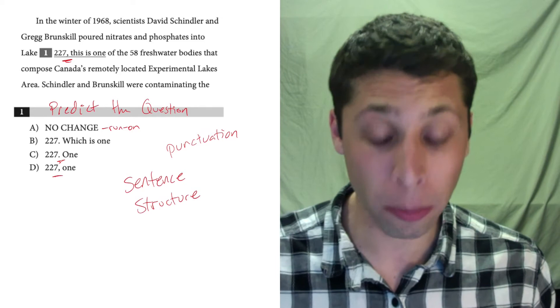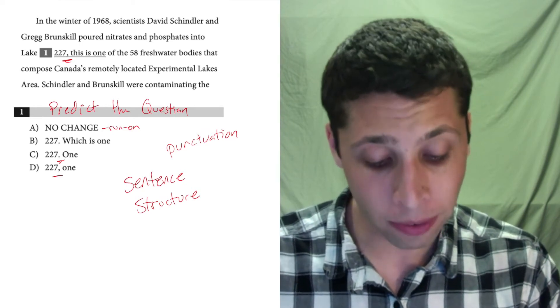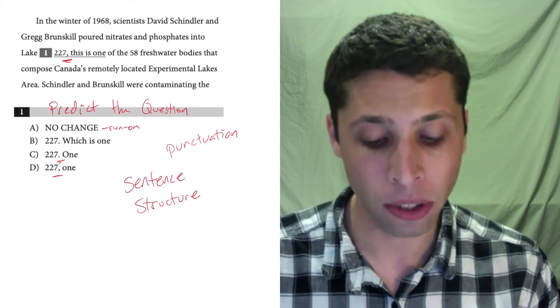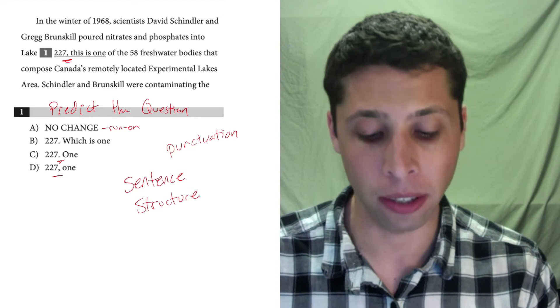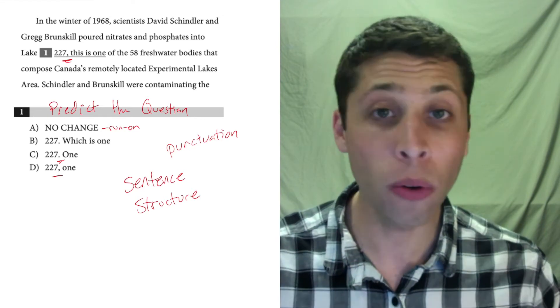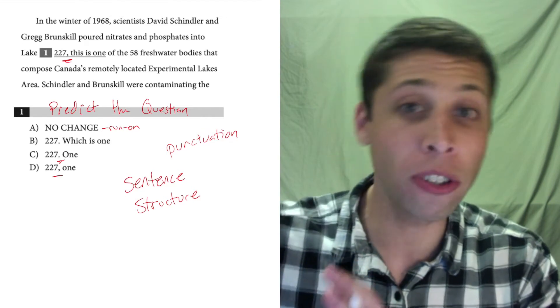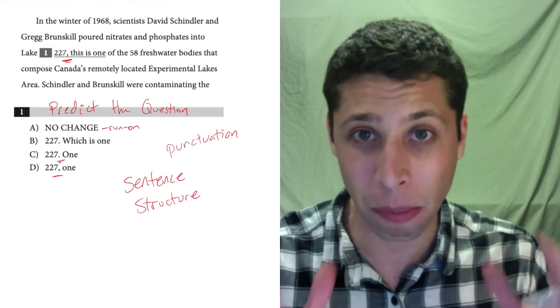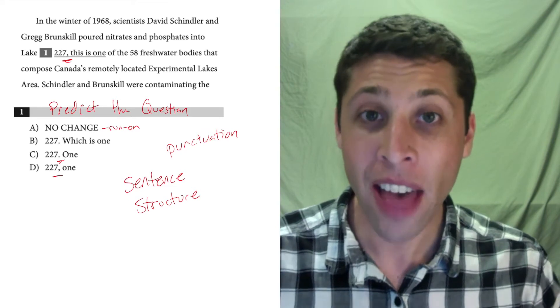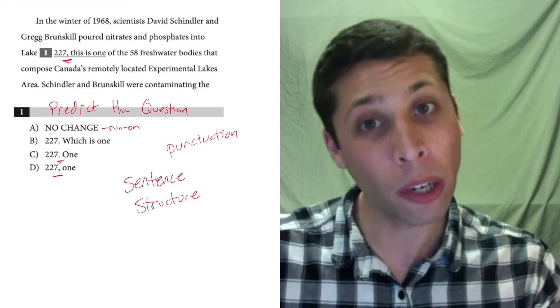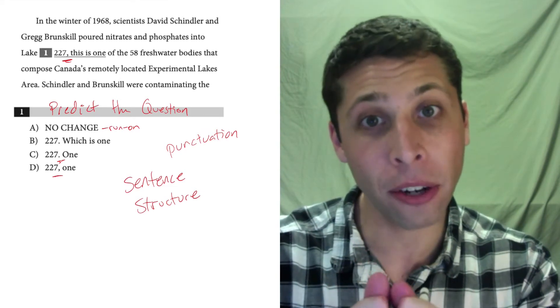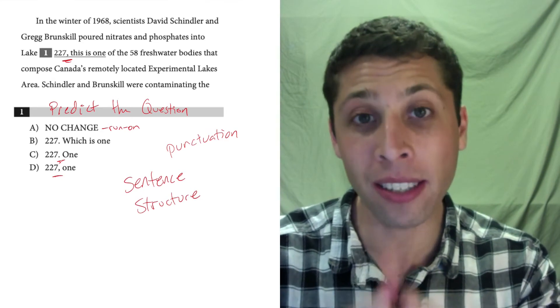The next piece is also a complete thought. This is one of the 58 freshwater bodies that composed Canada's remotely located experimental lakes area. That's its own separate thought. It exists in its own ecosystem of grammar. The first sentence that comes before could not even exist and we'd be fine with the second sentence. That's not okay if we want to try to join these two ideas together with only a comma. We need something more than that.